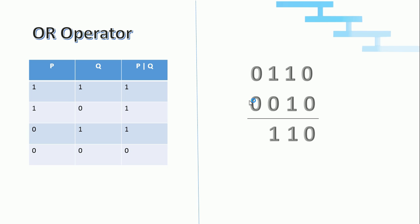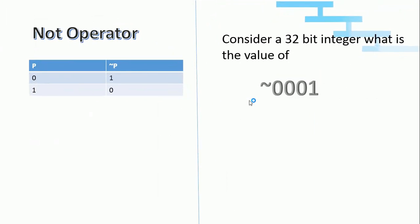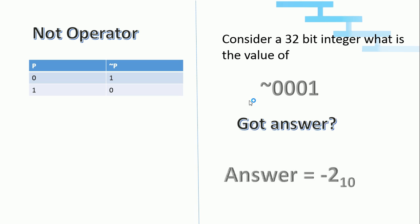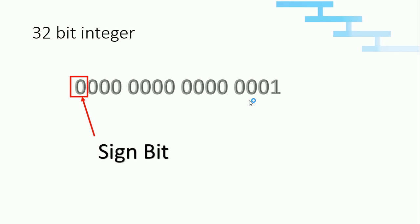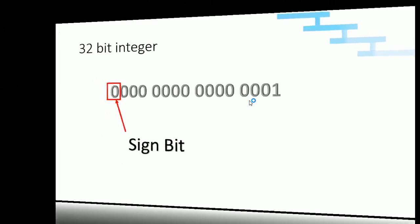Now we will see about the NOT operator. NOT operator is very simple: if the input is 0, the output is 1; if the input is 1, the output is 0. Consider a 32-bit integer value — what is the value of NOT of 1? If you think the value will be 0, no — the value is minus 2. How did we get minus 2? In a 32-bit integer the leftmost bit is the sign bit. If the sign bit is 0 the number is positive; if the leftmost bit is 1 it is a negative value. We compute the value of a negative number by doing 2's complement.